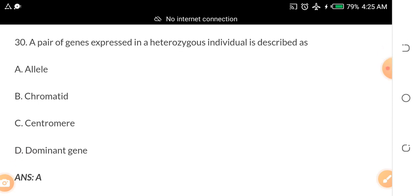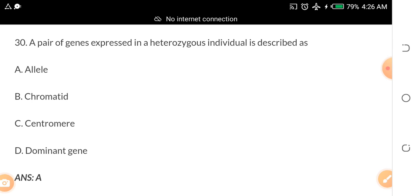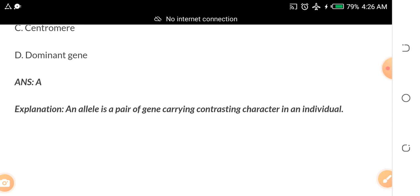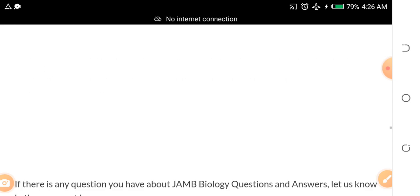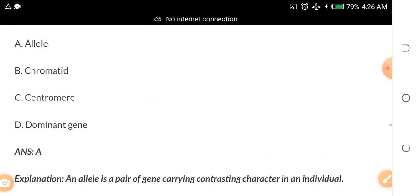A pair of genes expressed in a heterozygous individual is described as A. alleles B. chromatid C. centromere D. dominant gene. The answer is allele. An allele is a pair of genes carrying contrasting characteristics in an individual.